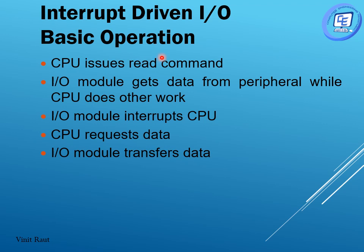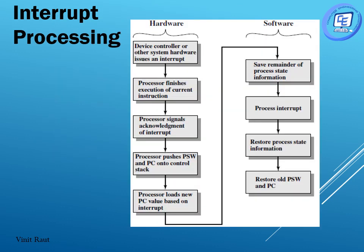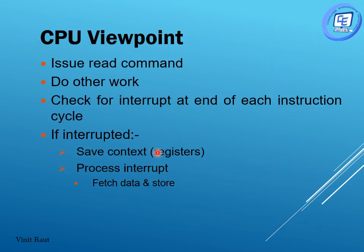These are the basic operations of interrupt driven IO. First, the CPU issues a read command. Then the IO module gets the data from the peripheral while the CPU does other work. Once the data is ready with the IO module, it interrupts the CPU. The CPU requests the data, which is made available on the data bus by the IO module. This involves saving the context — PSW, PC, and the remainder of the process state — which is called context switching.